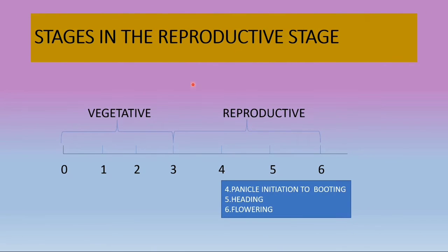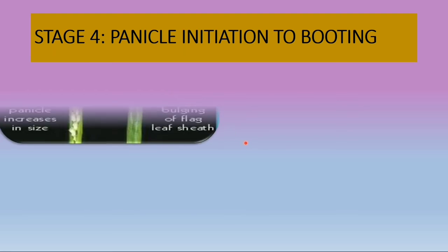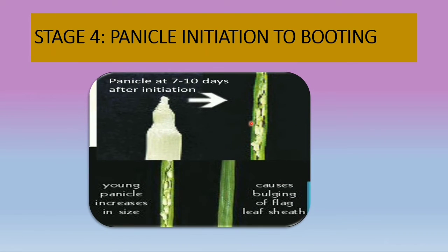In the reproductive stage, we have panicle initiation to booting, and the fifth stage is heading and flowering. Panicle initiation begins with the panicle primordium initiation at the tip of the growing shoot. At the end of this stage, the panicle is about to emerge and spikelets become distinct. The panicle increases in size 7 to 10 days after initiation, causing the bulging of the flag leaf sheath.